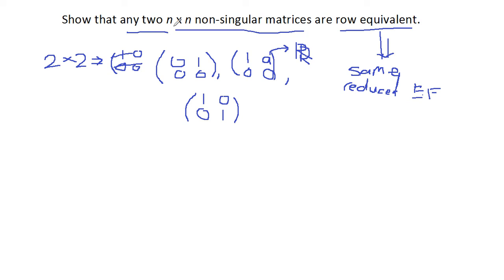Now let's show that any two n times n non-singular matrices have the same reduced echelon form. Let's take n to be equal to two.